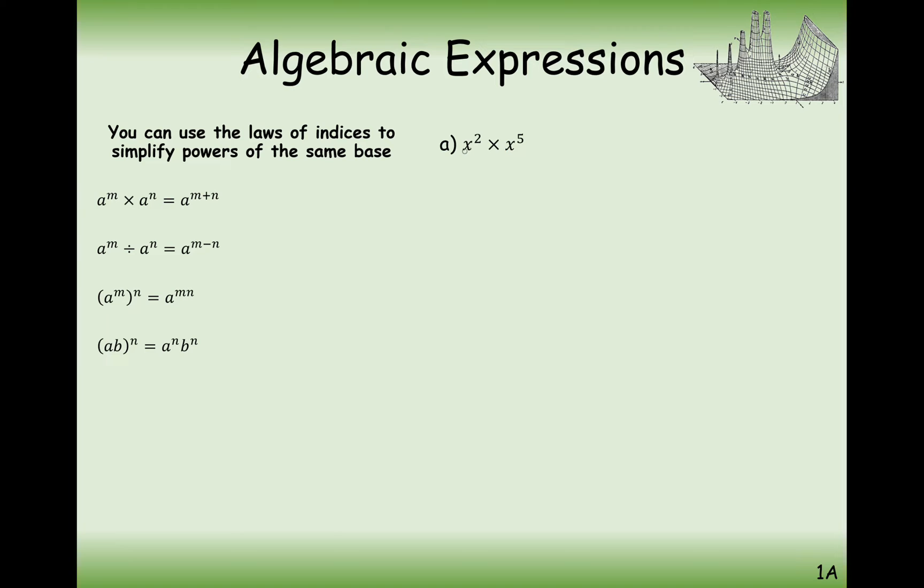So the first example here, we've got x squared times x to the power of 5. That's the first rule here. So we're going to add those powers together and we get x to the power of 7. On the next one here, we have numbers that are in front of our algebraic expressions. Don't get these rules confused with what we do with numbers. We do exactly the same as what we would normally do with numbers. We times them. 2 times 3 will give us 6 and then add the powers. We get 6r to the power of 5.